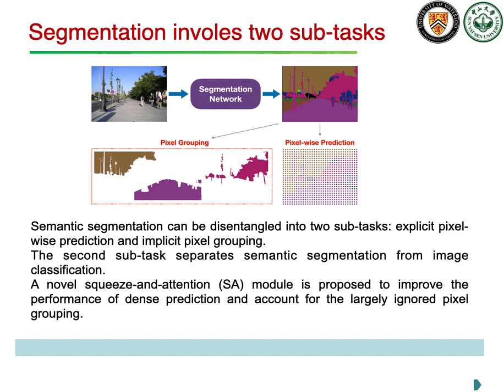We present Squeeze and Attention Networks for semantic segmentation. In this work, we argue that segmentation can be disentangled into two subtasks: pixel-wise prediction and pixel grouping. The second subtask separates semantic segmentation from image classification.